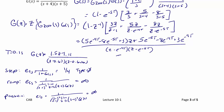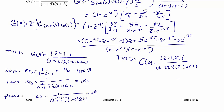For T equal to 0.5 seconds, G(Z) equals (3Z plus 1.844) over (Z minus 1.22)(Z minus 1.284). We can stop here because both poles are greater than 1 in magnitude, which yields an unstable system. Since the system is unstable, it cannot track any kind of input, and the steady state error is infinity.